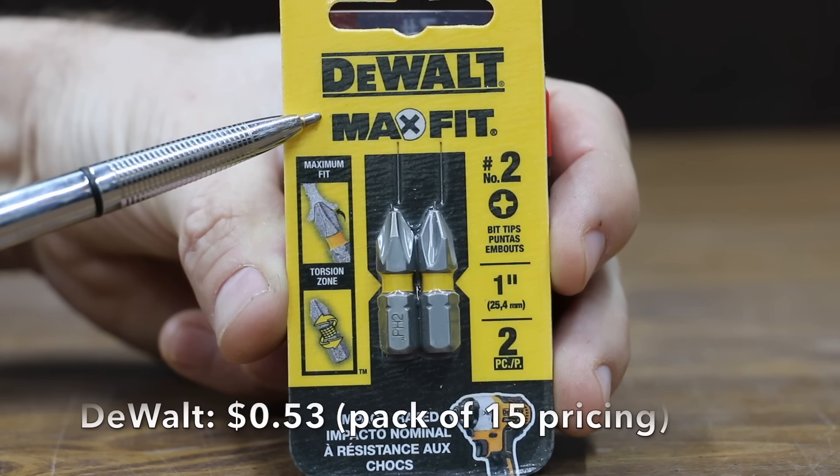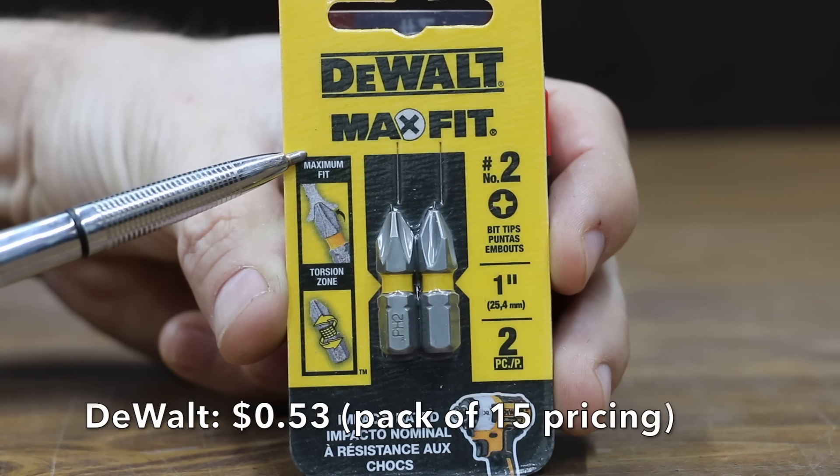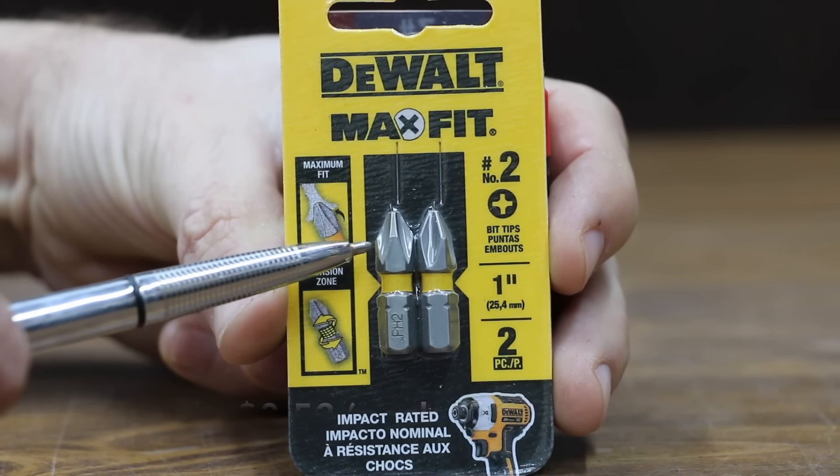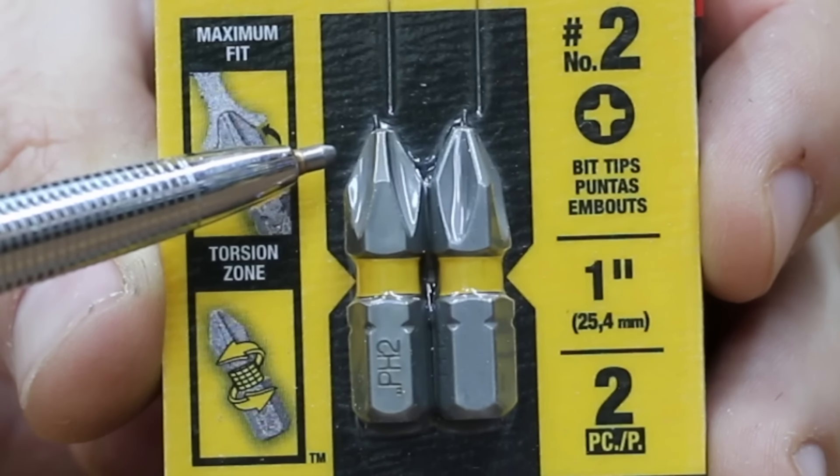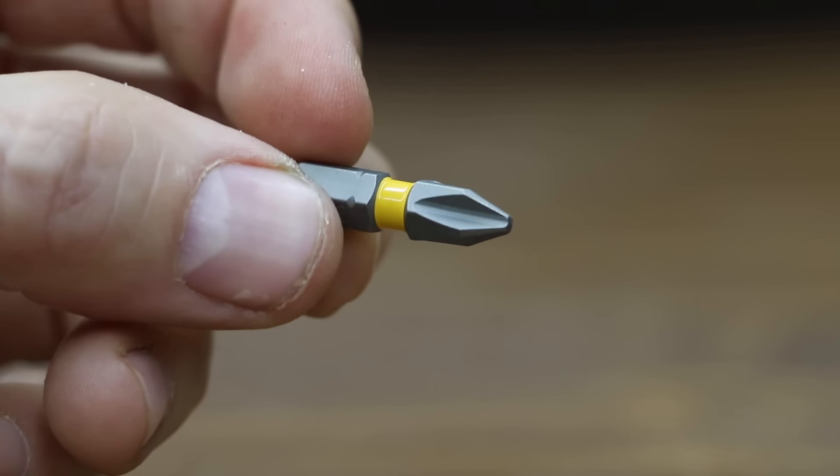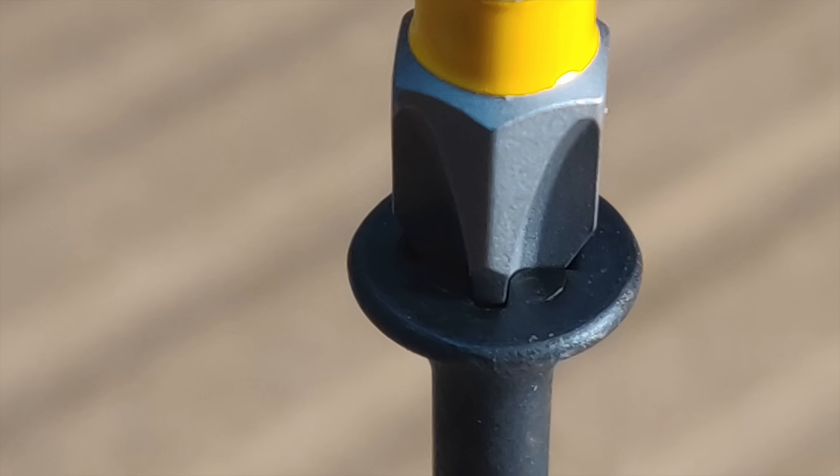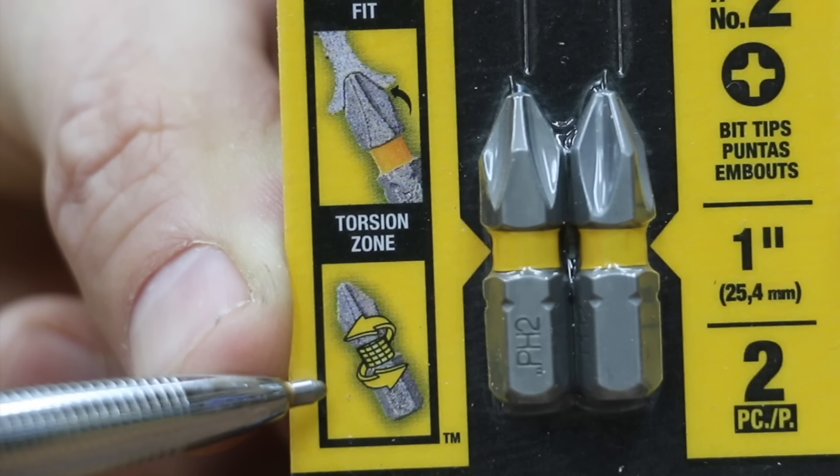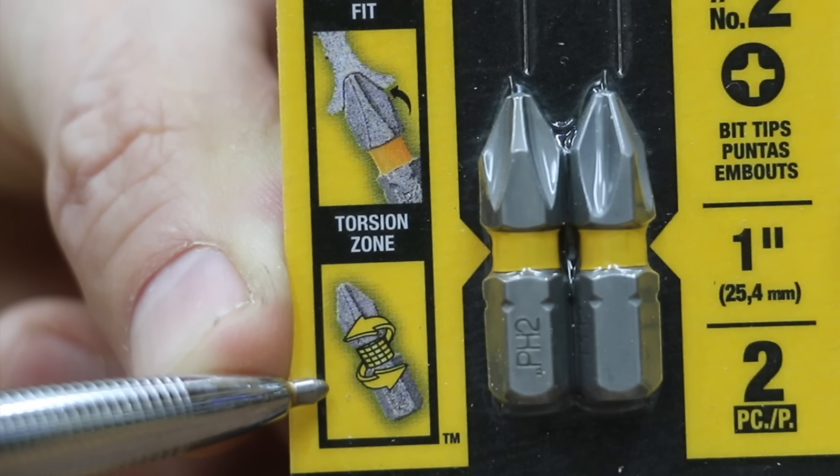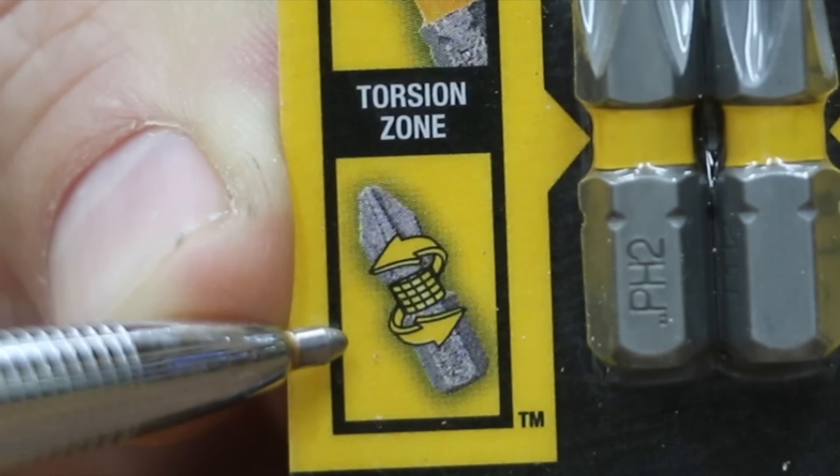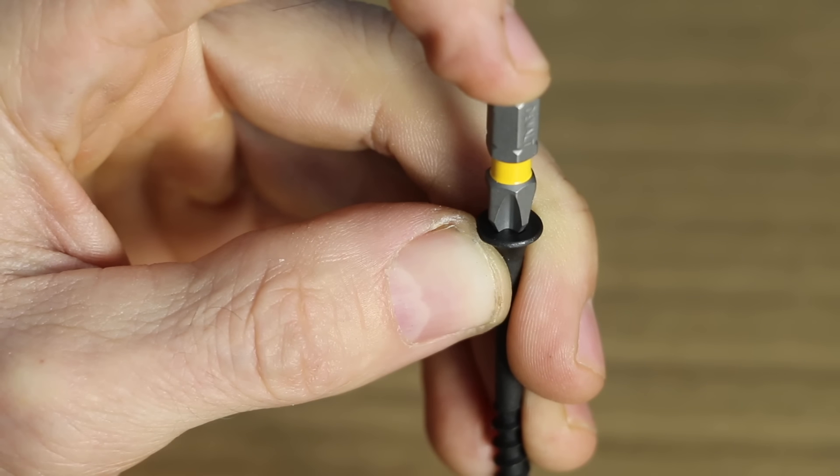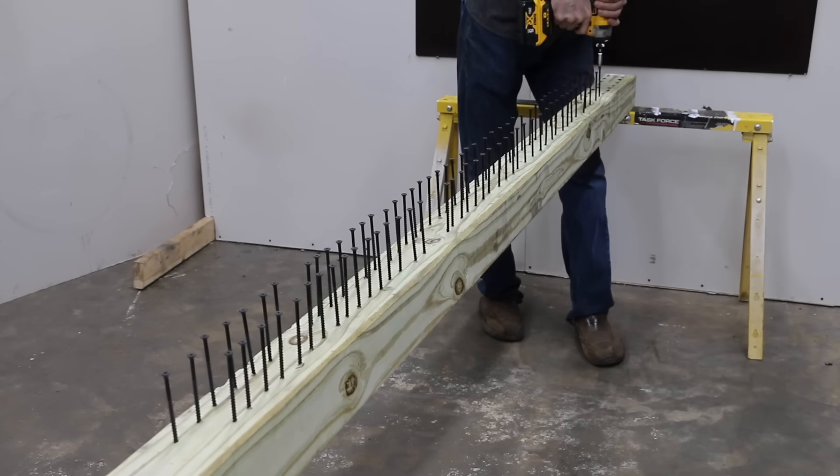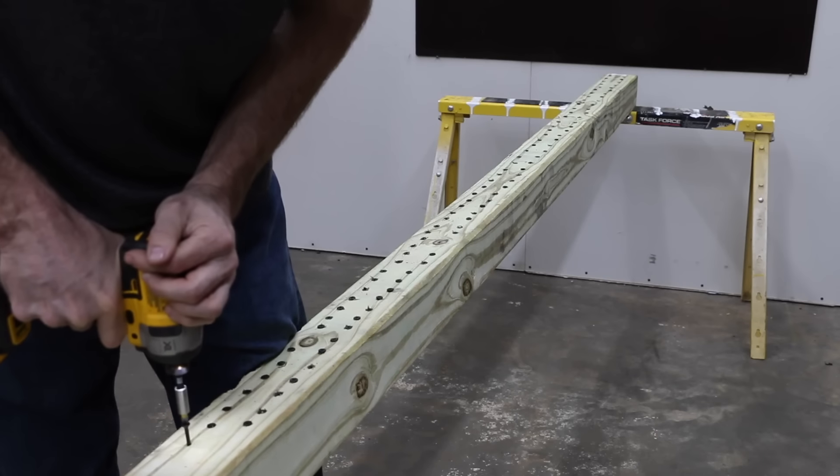Costing 53 cents each, the same as the Bosch brand, is this DeWalt Max Fit, which claims its optimized tip geometry reduces wear and creates an ideal fit with every fastener. CNC manufacturing ensures the product consistently delivers the highest level of quality. Each bit features a unique torsion zone to deliver long life in both metal and wood fastening applications. Made in China. Very nice tight fit with the DeWalt with very little wobble. I really liked the performance of the DeWalt. It provided a great fit.